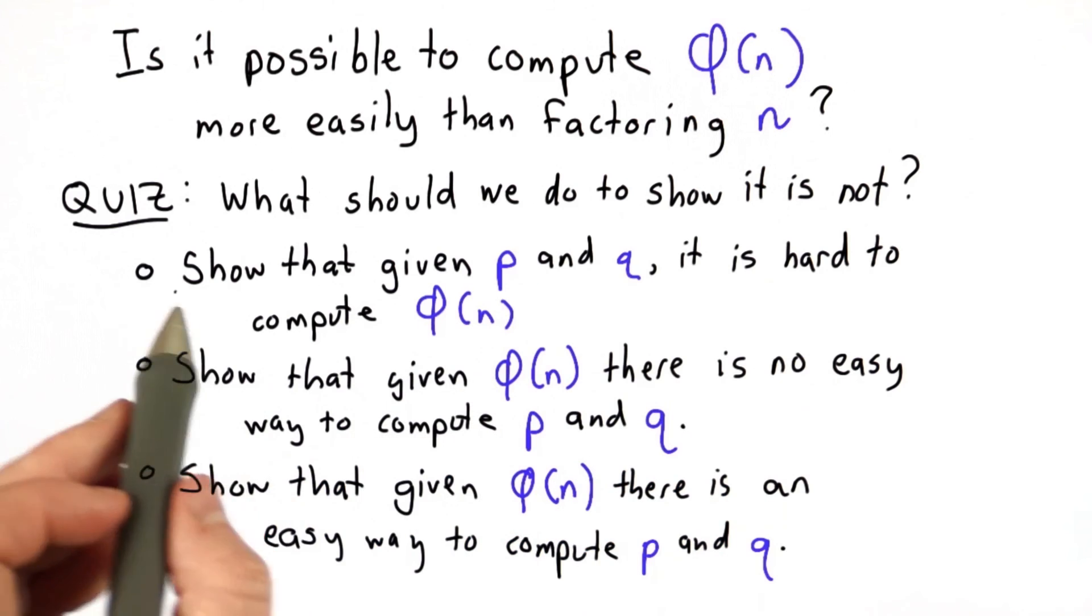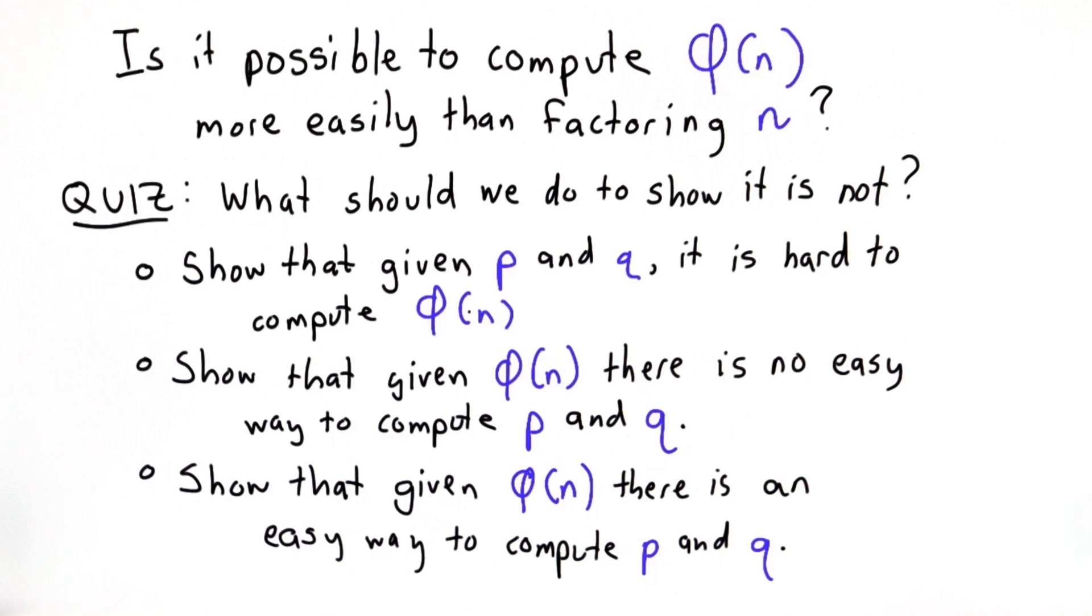So here are the choices. Given p and q, show that it's hard to compute the totient of n. Given the totient of n, show that there's no easy way to compute p and q. Or given the totient of n, show that there's an easy way to compute p and q.